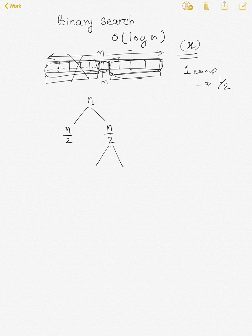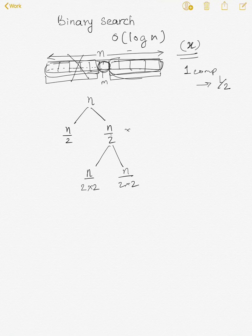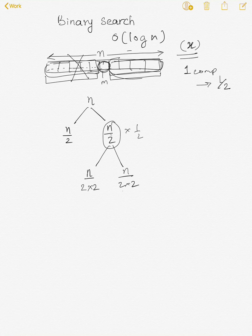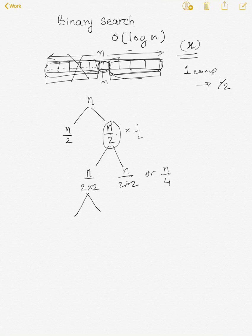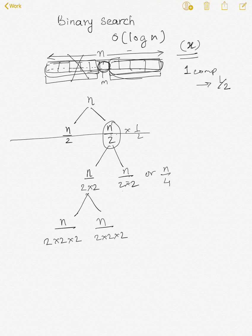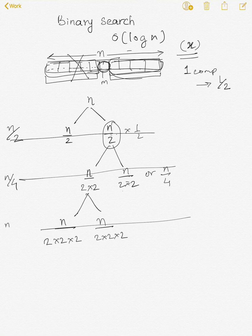We divide that sub-array into two, and now each part will be of size n/4 — that is n/2 divided by 2 again. Then we repeat the same process on one of these two sub-arrays. At each level the size halves: at the first level it's n/2, at the next it's n/4, then n/8, and so on.